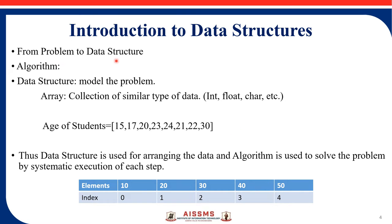From problem to data structure and algorithm — data structure needs a model for the problem. An array is one data type, or rather a collection of similar types of data. These are the data types: integer, float, character, and string — all of these are data types.